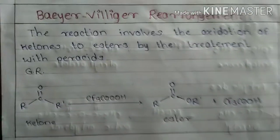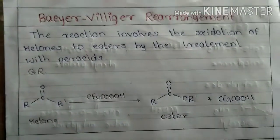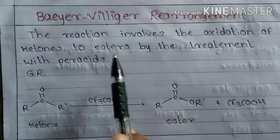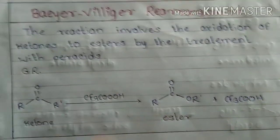Today we are going to discuss the Baeyer-Villiger rearrangement. The reaction involves the oxidation of ketones to esters by the treatment with peracids.